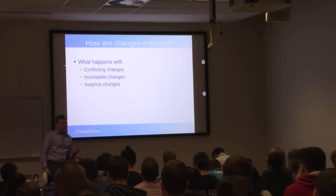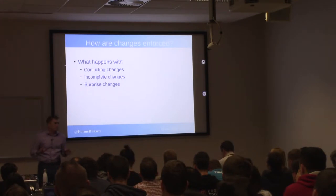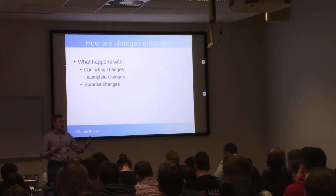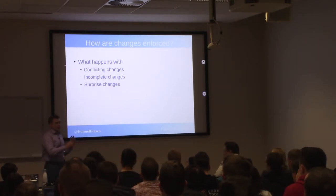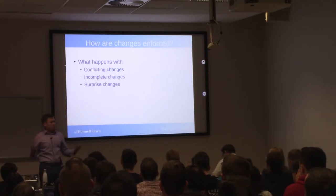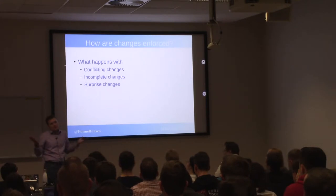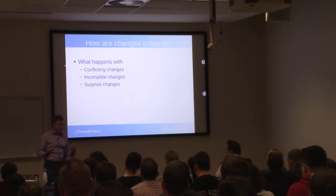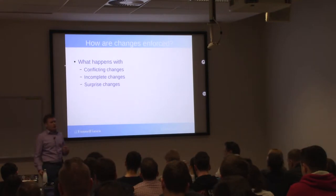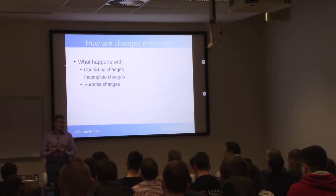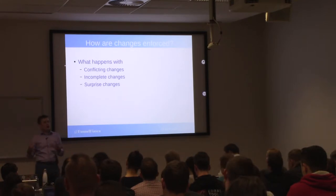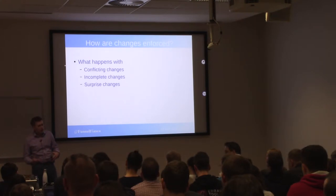You need to think about how changes are enforced. A dirty little program management secret: you can't make people follow the process. People will break the process sometimes. In corporate environments, you can go to their manager. In community projects, you have volunteers — they're going to either go away or just keep not doing it. You need some enforcement mechanism that works for your community. What happens if you have conflicting changes? Alice and Bob both have changes that break each other — somebody has to mediate that. Do you reject them both, pick whoever went first, or have them work it out?